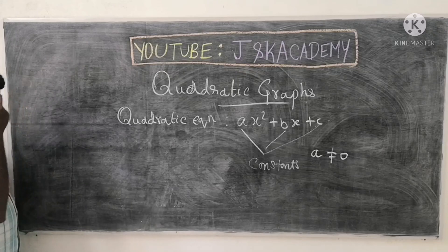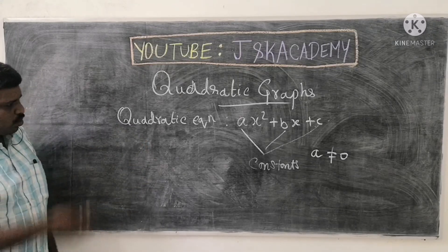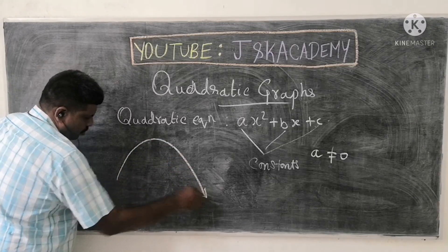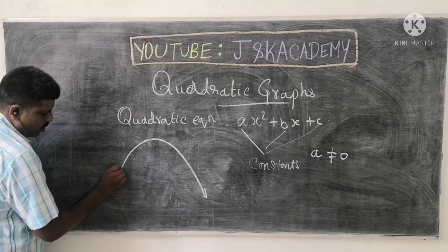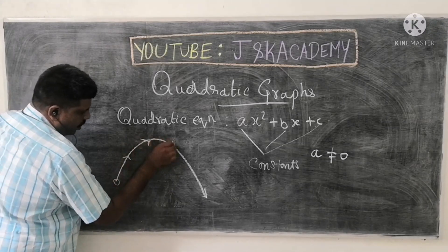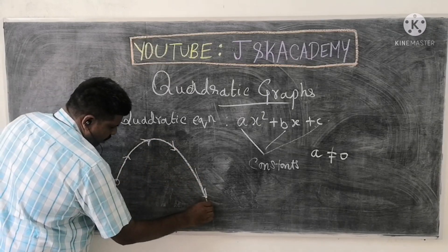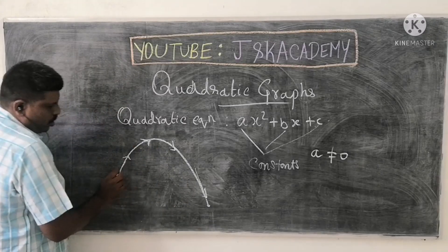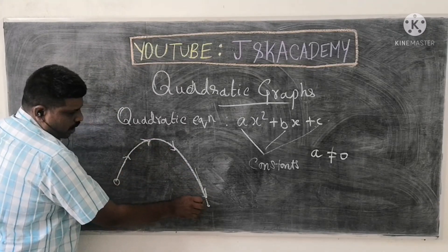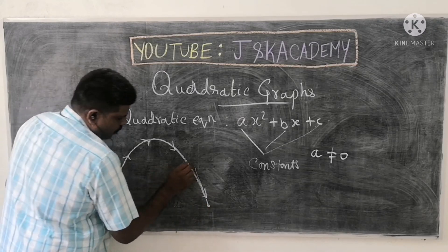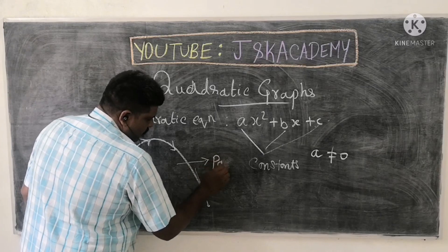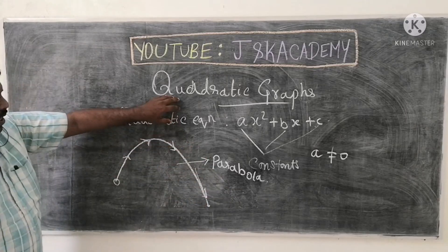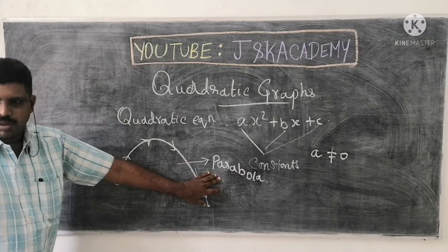So this is what we can do. One example is if you have a ball. Parabola. Parabola is a quadratic equation. One example is Parabola.